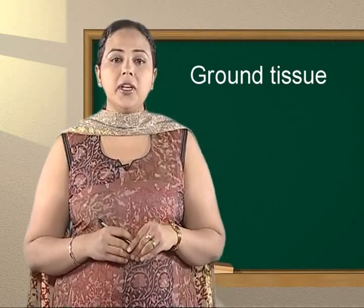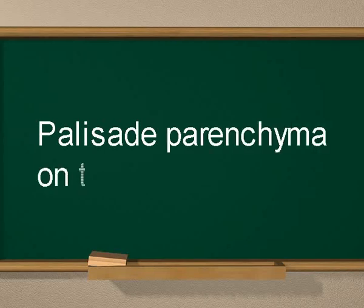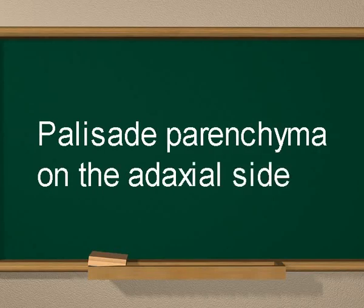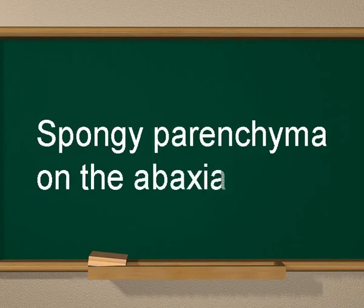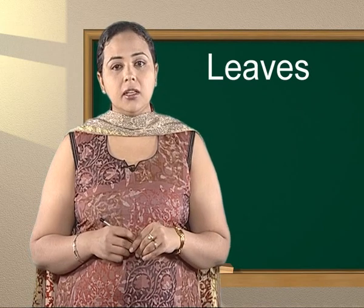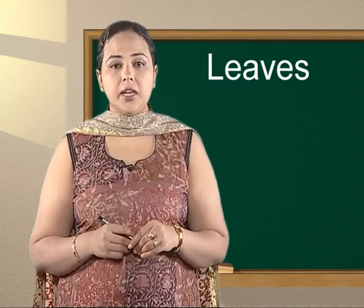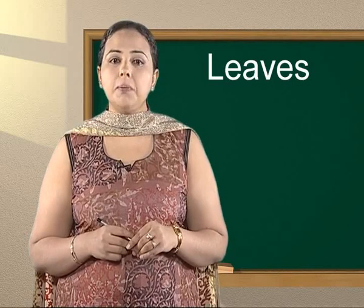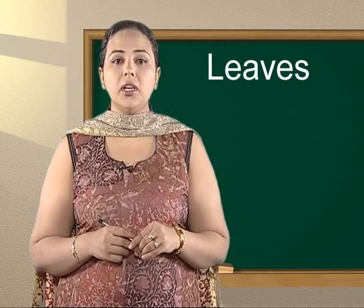Mesophyll is often differentiated into palisade parenchyma on the adaxial side — that is the upper part of the leaf — and spongy parenchyma on the abaxial side, or the lower surface of the leaf. Today we will look at the examples of leaf anatomy which will help us to know more about the internal structure of a leaf.